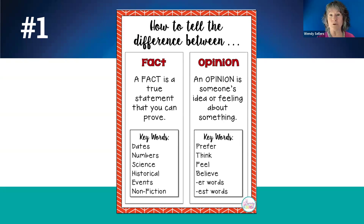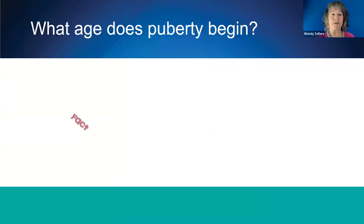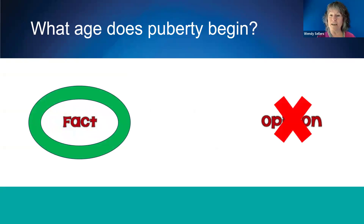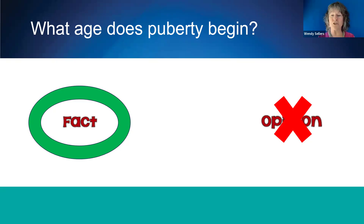Let's practice distinguishing between the two types of questions. Our first example is: what age does puberty begin? Is this a fact or an opinion question? Yes, if you said it was a fact question, that is true, because we have data and medical professionals who can tell us when puberty begins. While there is an age range when puberty can begin and it varies from individual to individual, it's still factual. You can look up the answer to factual questions if you don't know the answers and get back to your students.